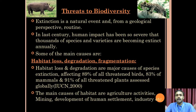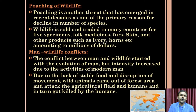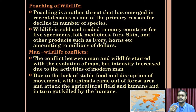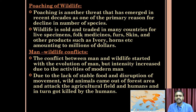Foraging of wildlife is another threat emerging in recent decades and is one of the primary reasons for the decline in the number of species. Wildlife is sold and traded in many countries for live specimens, folk medicine, for skin and other products like ivory, horns, amounting to millions of dollars.